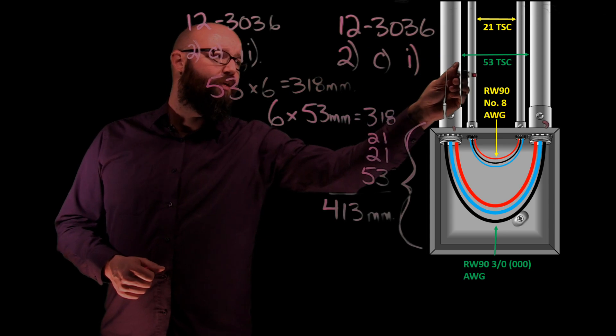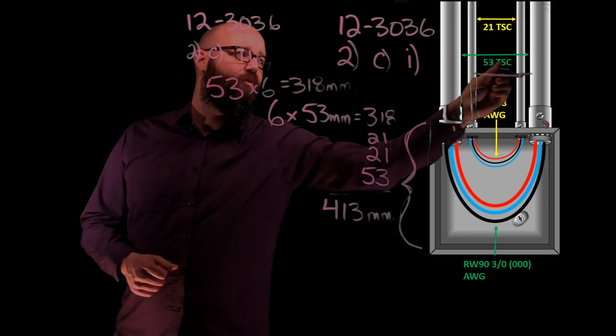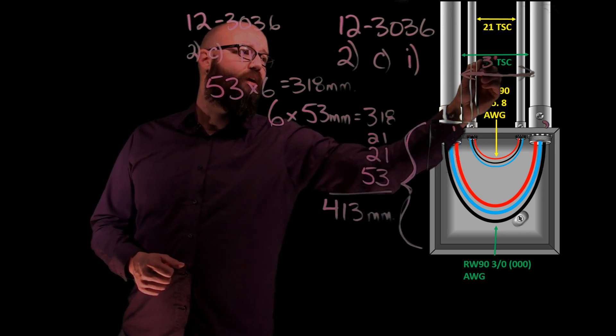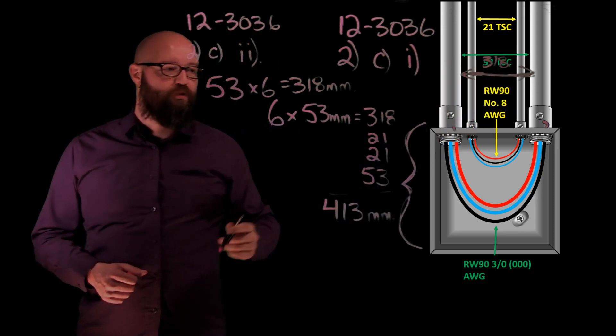I'm going to make sure that in between these two right here, or rather our outside ones are 53 trade size, we have at least 318 millimeters between them.